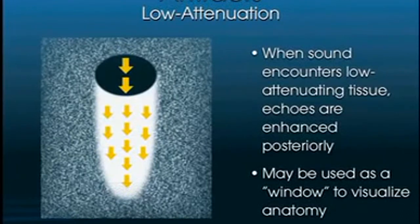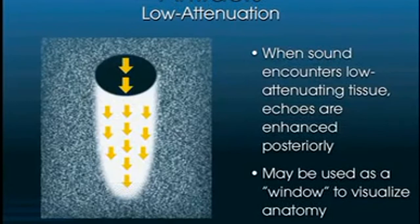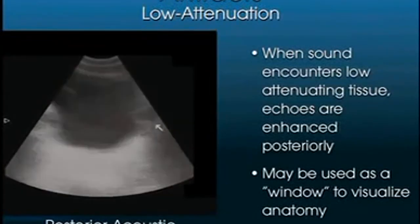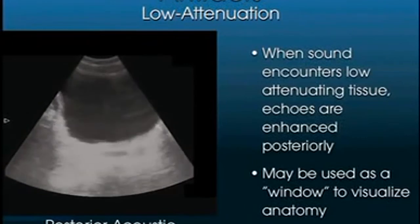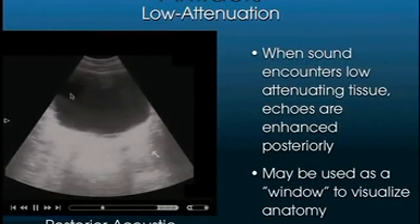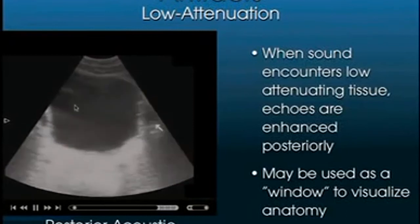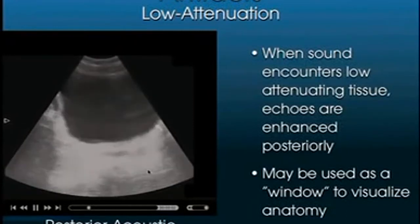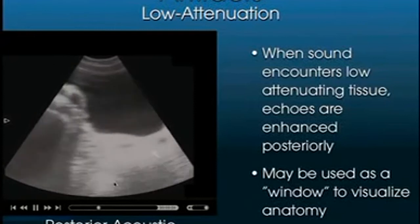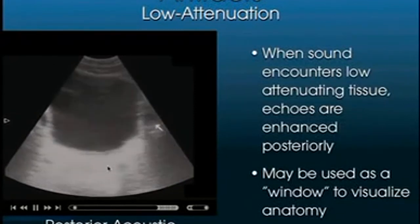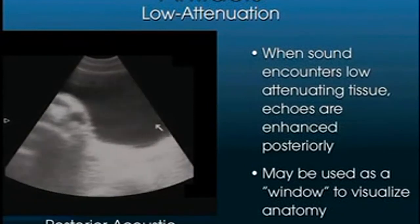Sometimes sound travels through an organ very easily, such as through fluid, water, or the urinary bladder. When sound encounters this low-attenuating tissue, the echoes behind it get enhanced posteriorly — posterior acoustic enhancement. That's why the bladder is used as an acoustic window to visualize structures behind it. The anechoic bladder appears black on screen, while structures behind it are echobright due to the low-attenuating effect.